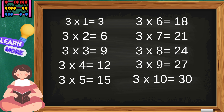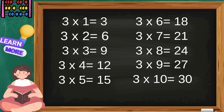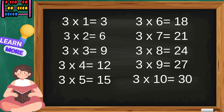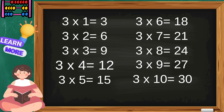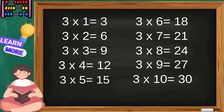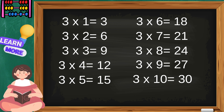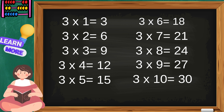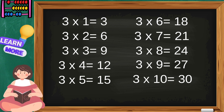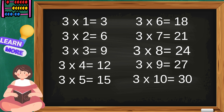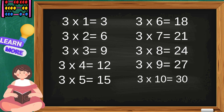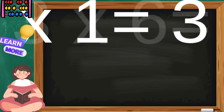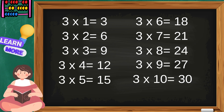Three ones are three, three twos are six, three threes are nine, three fours are twelve, three fives are fifteen, three sixes are eighteen, three sevens are twenty-one, three eights are twenty-four, three nines are twenty-seven, three tens are thirty. That was the table of three.